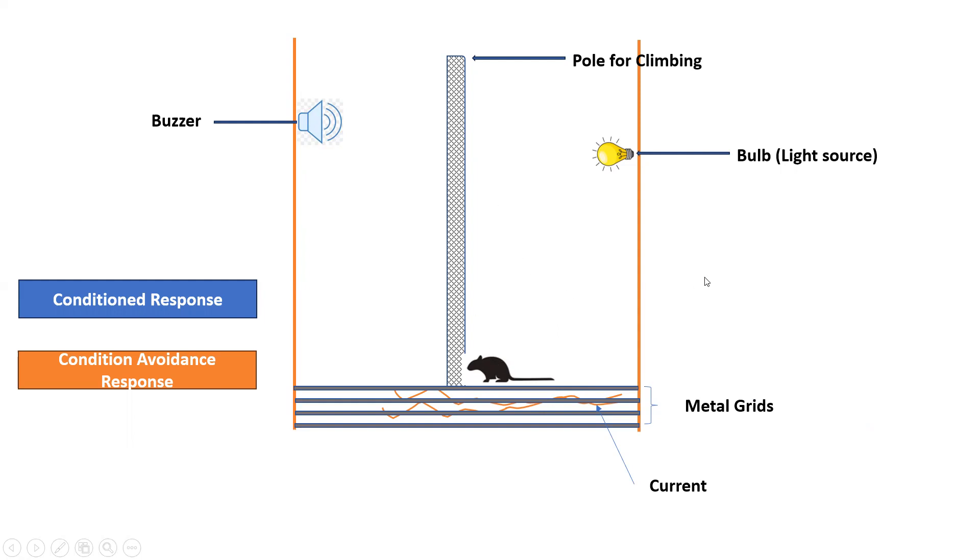Suppose you have the control animal not treated by any type of drug. If you give the buzzer and you put the current, the animal will move and climb. So it is called the conditioned response. So we have developed the condition in the animal so that the animal climbs over the pole.